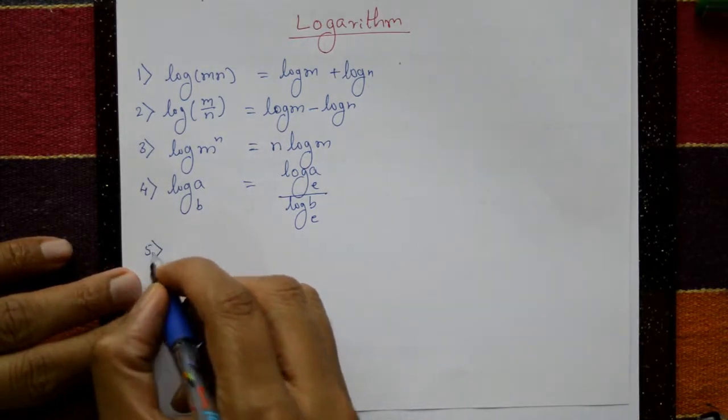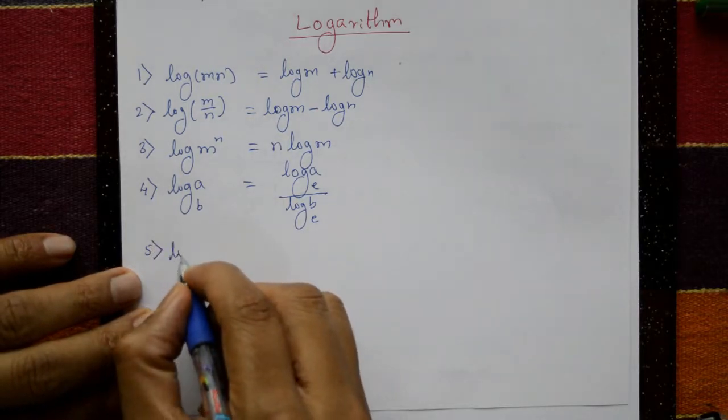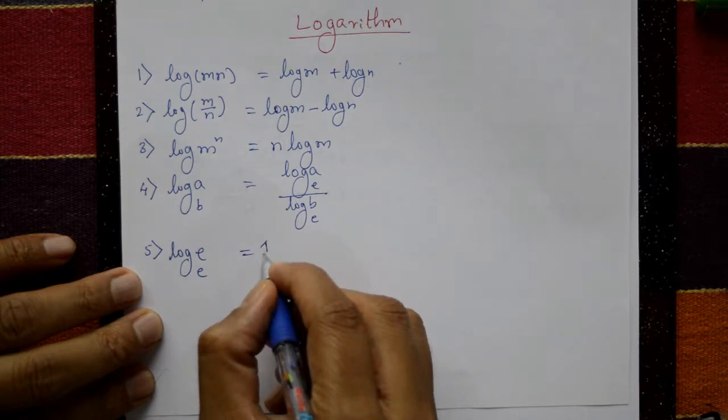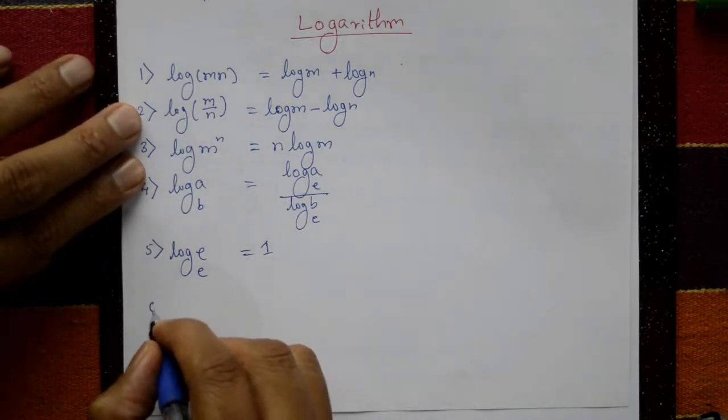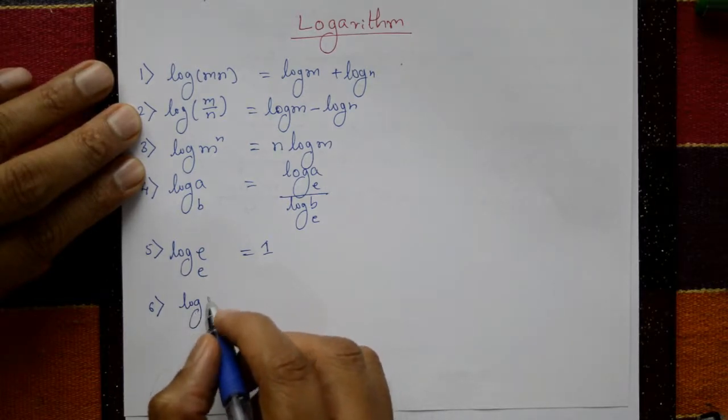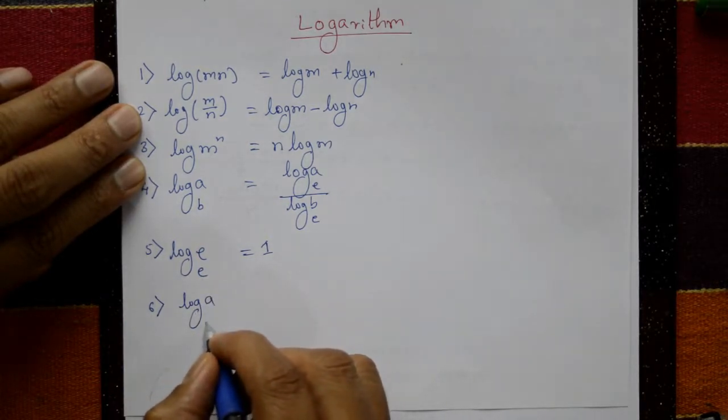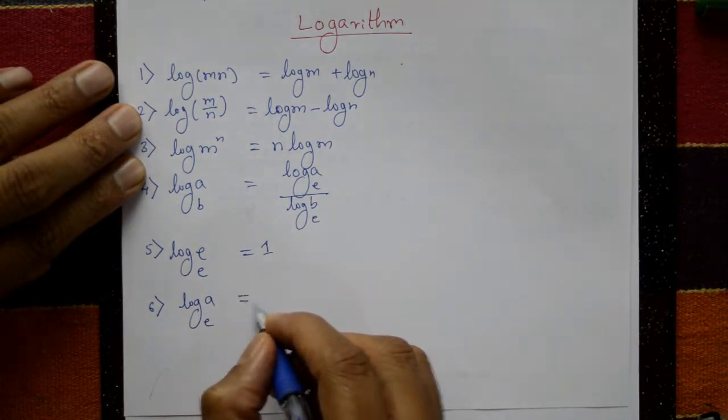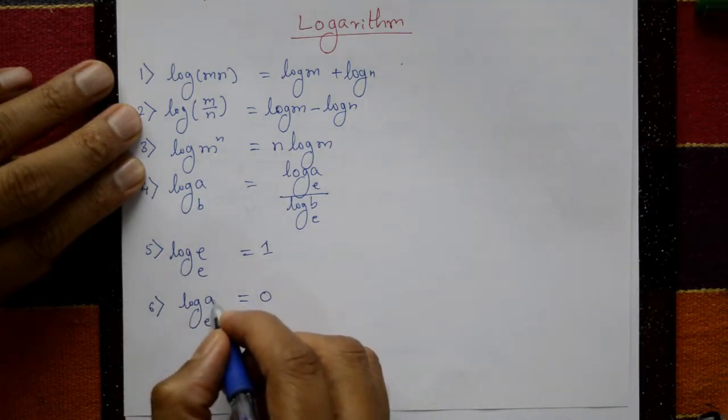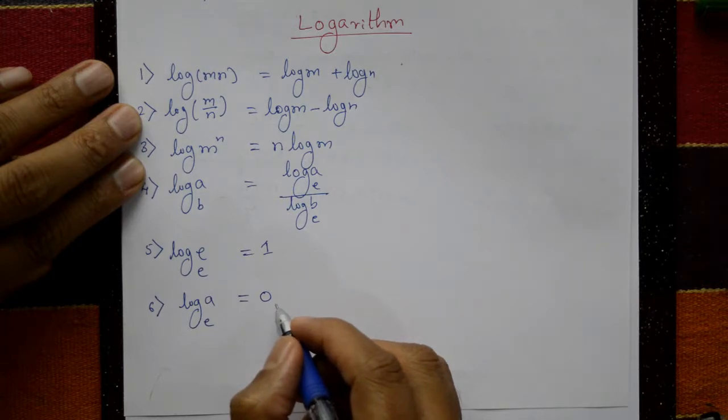Fifth one: log e to the base e is equal to one. Sixth one: log a to the base e is zero, or take any constant. If you take one, log one equals zero.